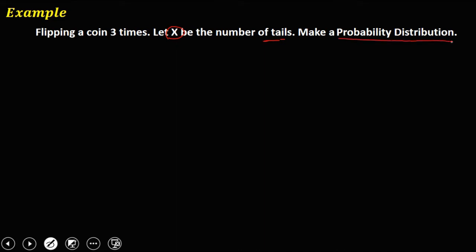When we flip a coin, we have two possible outcomes: head and tail. Since we're going to flip this coin three times, we need to list all the possible outcomes for this experiment. For the first flip, the possible results are head or tail. On the second flip, we have head or tail, and also head or tail.